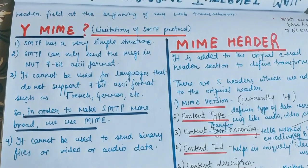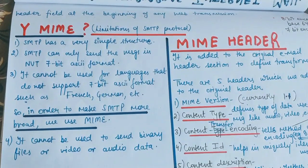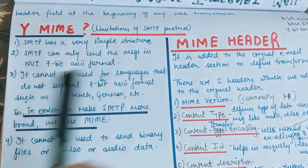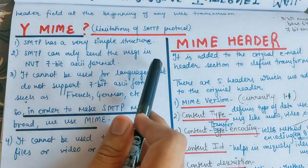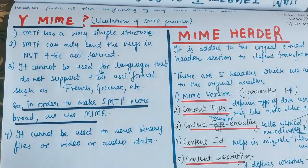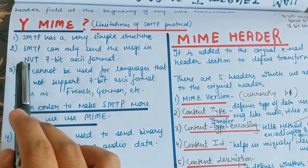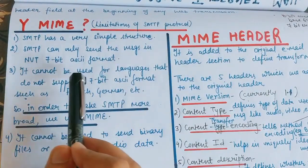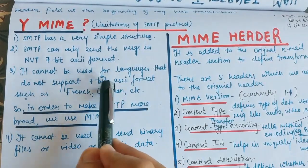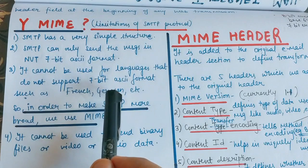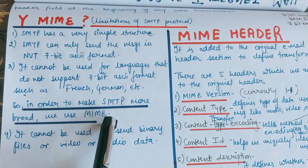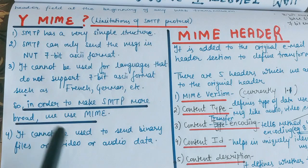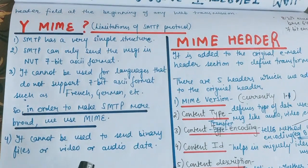Let us see why MIME was introduced — the limitations of SMTP. SMTP has a very simple structure. First, SMTP can only send messages in the NVT 7-bit ASCII format; if we have data in non-ASCII format we cannot send it. Second, it cannot be used for languages that do not support 7-bit ASCII, such as French or German. Third, it cannot be used to send binary files, audio data, or video data. These were the limitations of SMTP, which is why MIME was introduced.